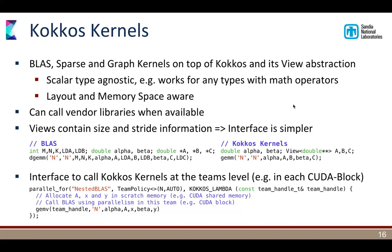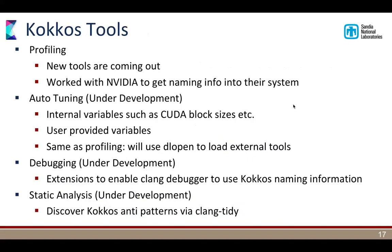We also have interfaces to call Kokkos kernels at the team level — within a hierarchical parallel context. You can call matrix-vector multiply within a CUDA block, using the block to execute that operation in parallel. On a V100, a single SM gives you almost 100 gigaflops per second of double precision throughput, so each of these is already a hefty computational unit. Kokkos tools provides profiling, auto-tuning, and debugging capabilities. The profiling support is the most mature, and we work with vendors to make these tools more useful.